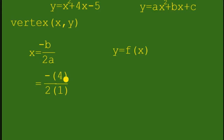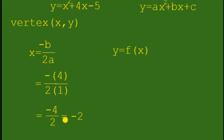Simplifying, we have negative 4 divided by 2 is equal to negative 2. So x is equal to negative 2.